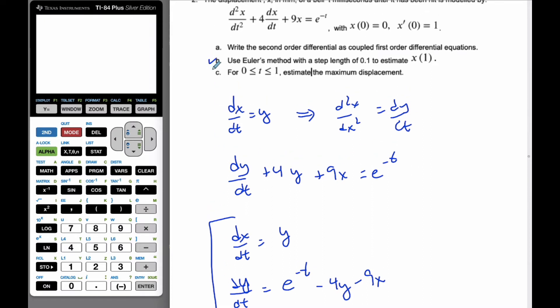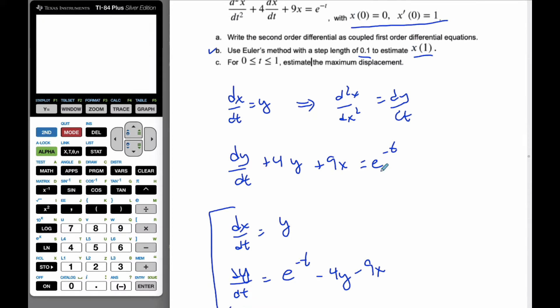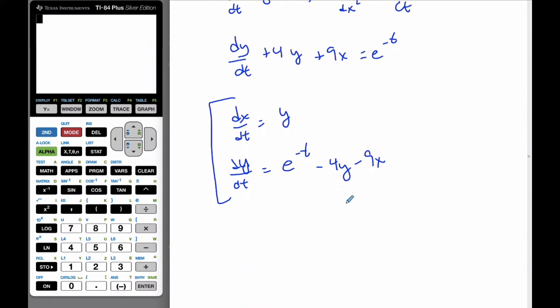Now, use Euler's method with a step of 0.1 to estimate this. Well, we know all this information. And so I'm going to make myself a table. So I'm going to get N, I have x, I have dx/dt, which is y, and I have t.